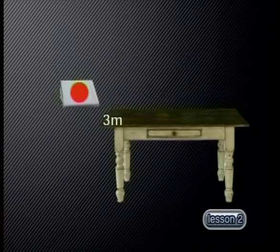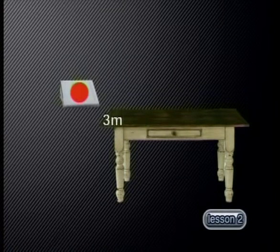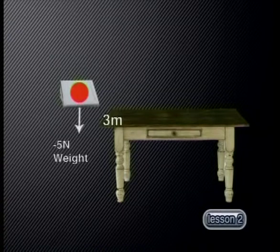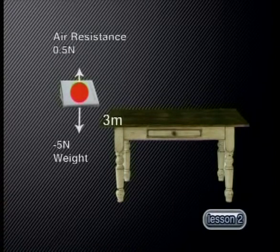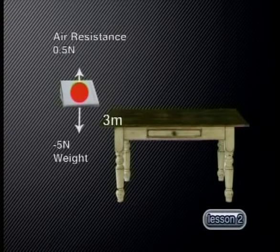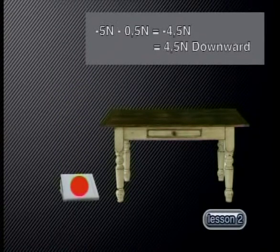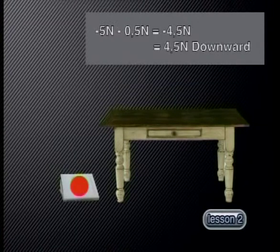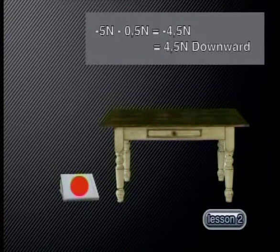However, if the book were to fall from a height of 3 meters, there would be the same downward force of 5 Newtons — which is its weight — but a smaller upward force of about half a Newton due to air resistance. There is now a resultant force of 4.5 Newtons downward. This resultant force causes the book to accelerate downward towards the floor.